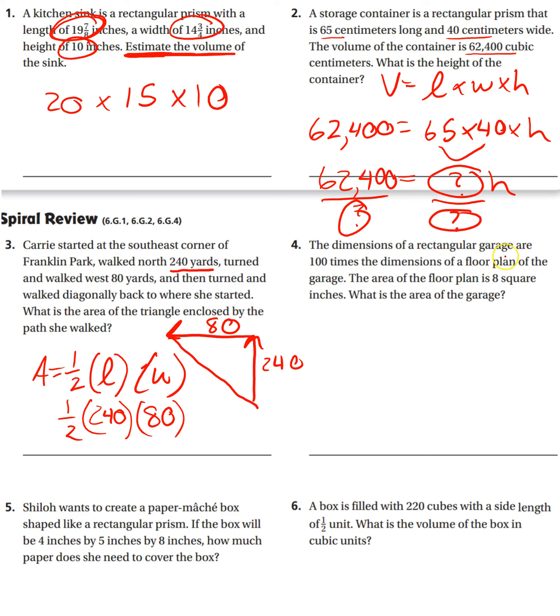Okay, the dimensions of a rectangular garage are 100 times the dimensions of the floor plan of the garage. The area of the floor plan is eight square inches. What is the area of the garage?